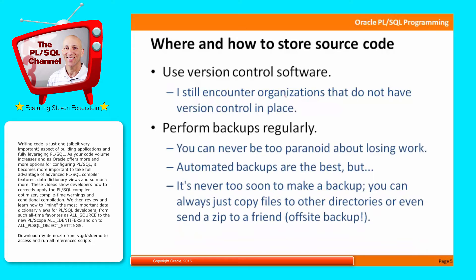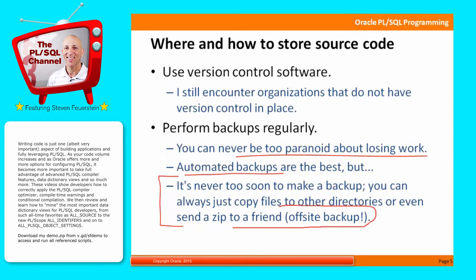Perform backups regularly. You can never be too paranoid about losing work. I'm not just talking about big backups — obviously you need to have automated backups in place every night, your source code backed up and so on. But it's never too soon to make a backup. You can just copy your files to a different directory, zip up your code and send it to a friend — you've got an off-site backup that way. Even these very simple occasional actions can save you a lot of grief, because sometimes the loss is just the last five minutes or half hour of work, but you've lost all sorts of detailed changes. Save often, make copies, and be prepared.